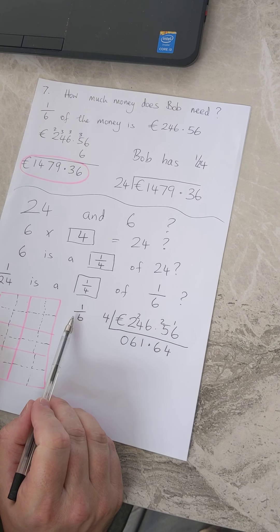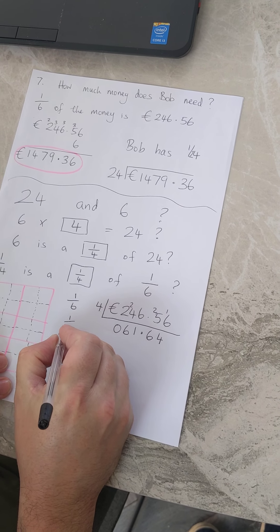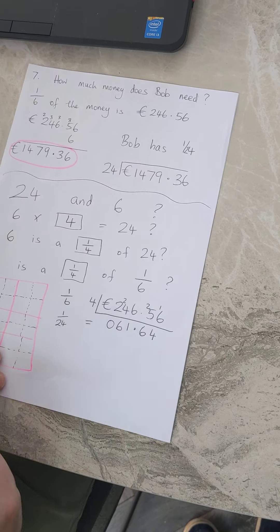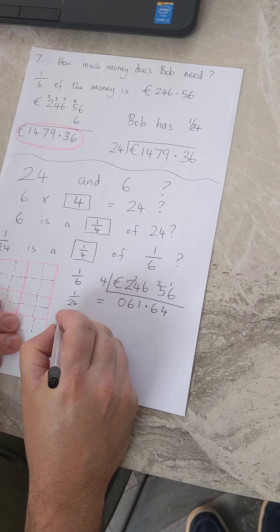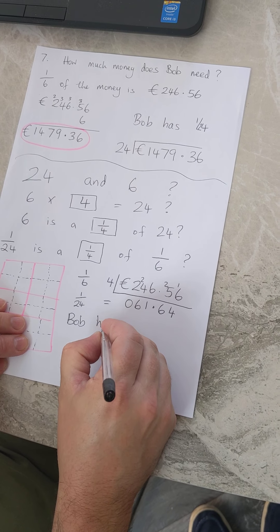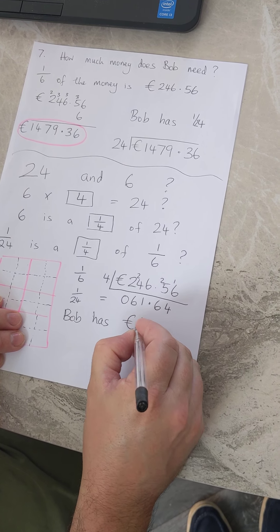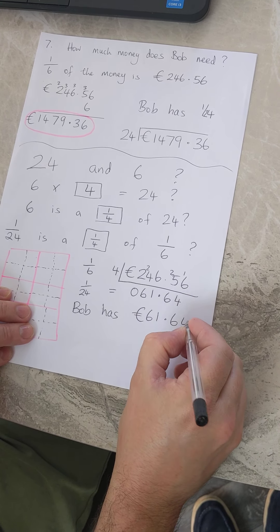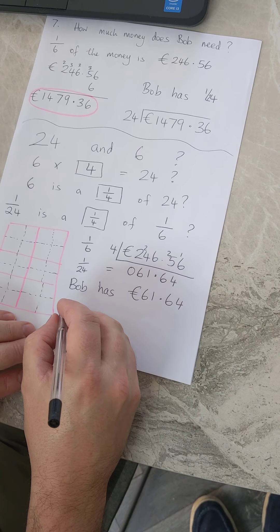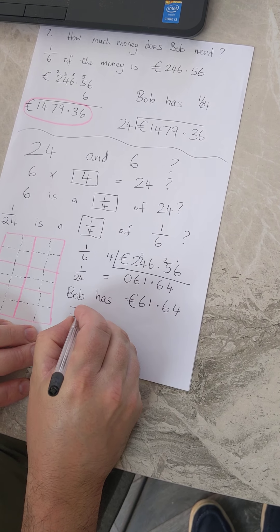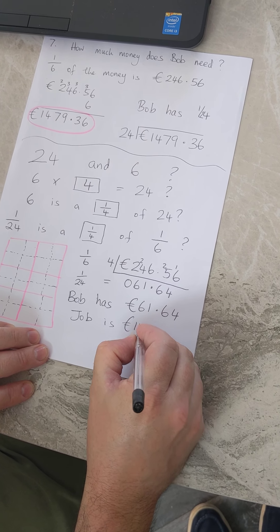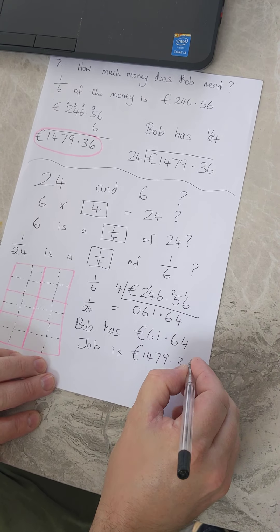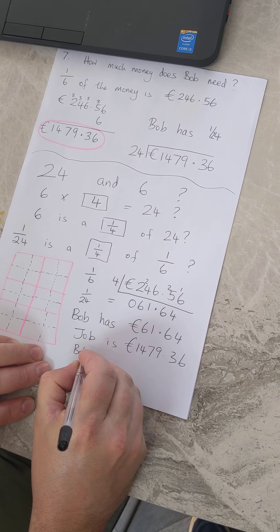That a quarter of my sixth, which is my one twenty-fourth that I needed, is 61.64. So Bob has 61.64. So what does he need? Well the job is gonna cost 1479.36. Bob has 61.64. Let's subtract this.